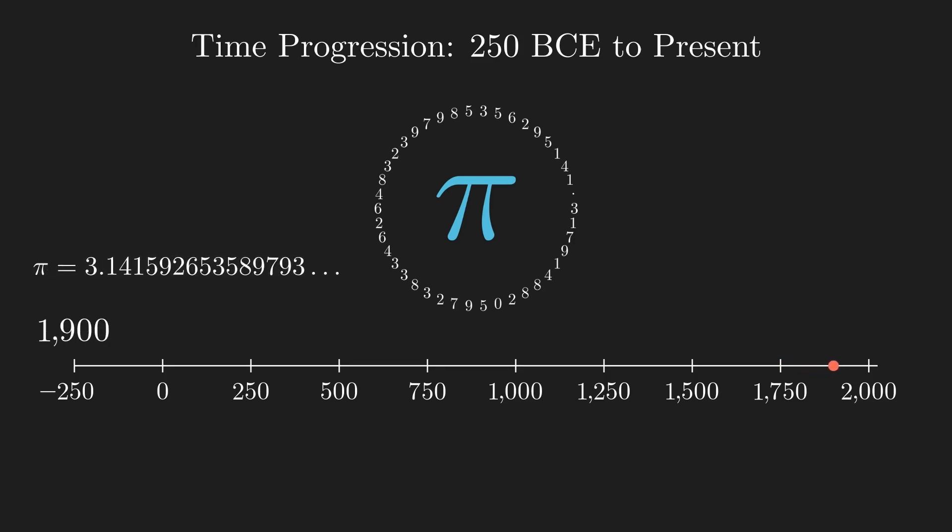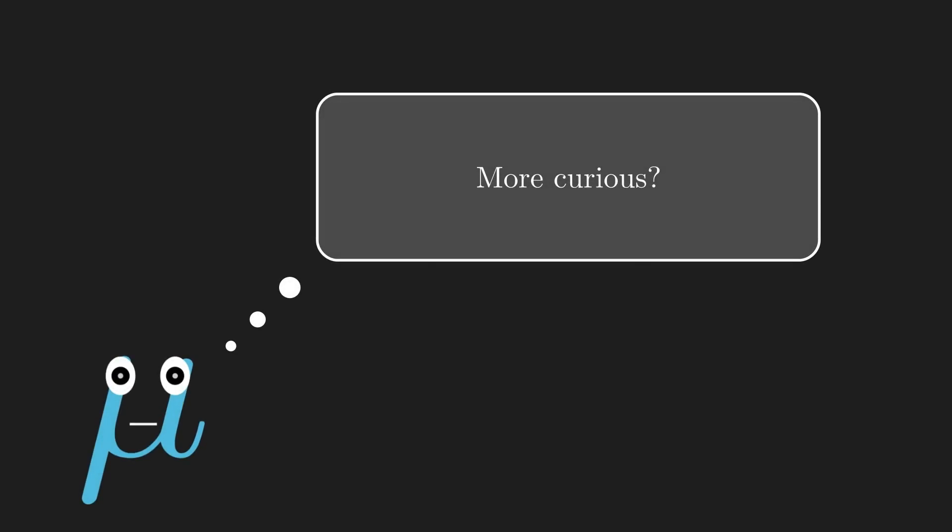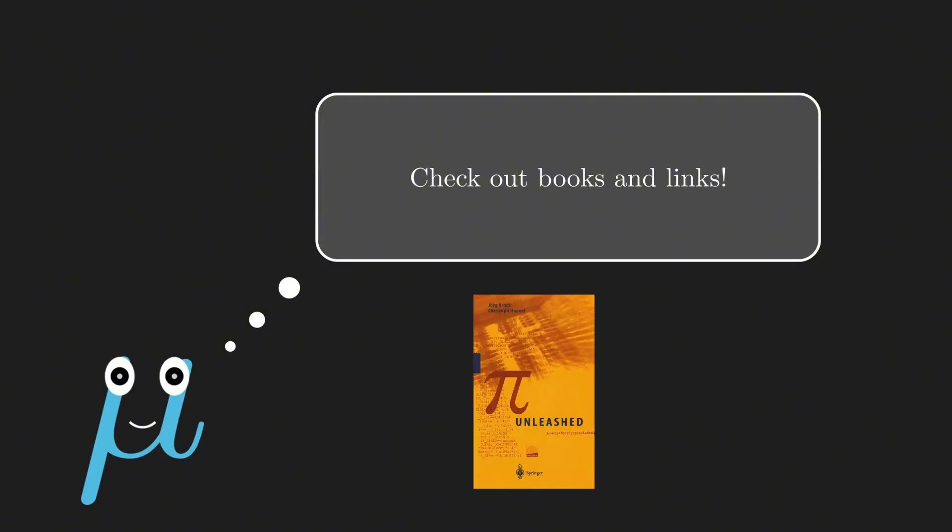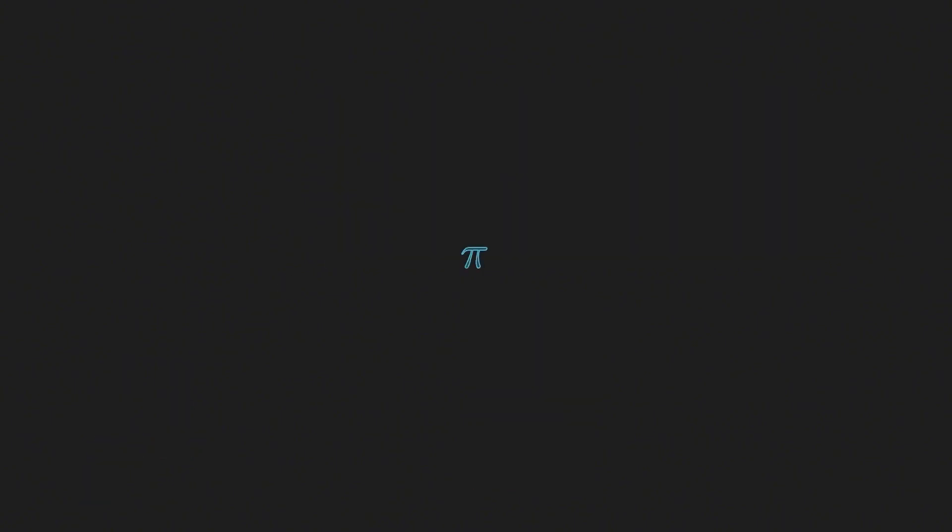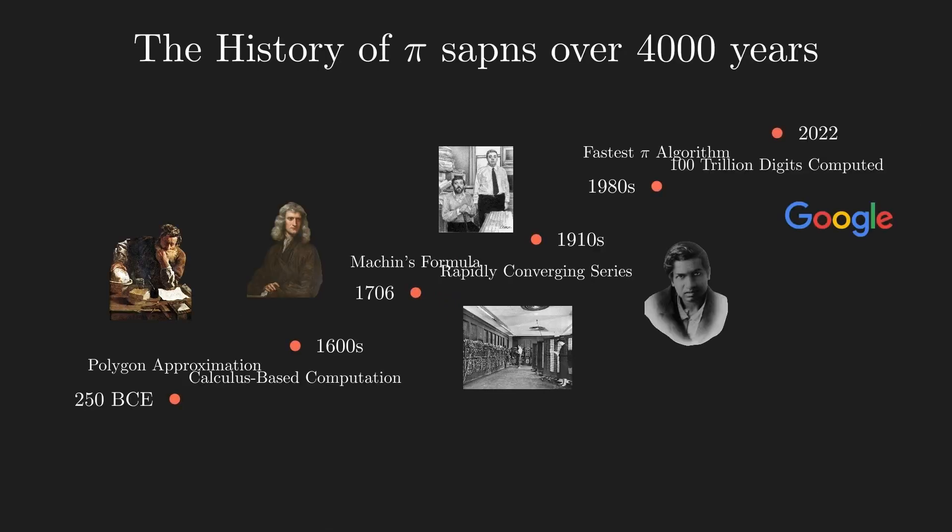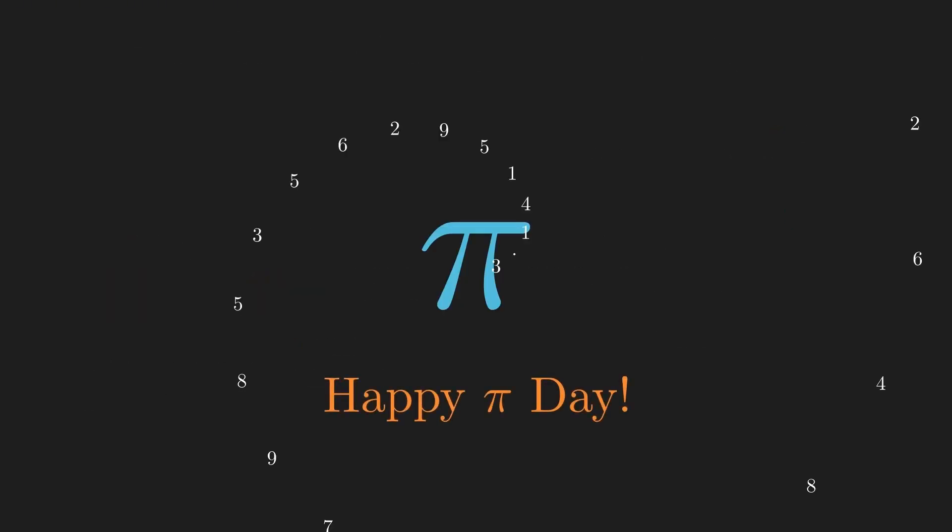That brings us to the end of this video. Before we wrap up, there is still so much more than we could cover here. If you are curious to explore further, check out the books and sources I refer to while making this video. You will find all links in the description. So next time you see Pi written as 3.14159 and so on, just remember, behind those digits lies a story of thousands of years of discovery. Thank you for watching and happy Pi day!